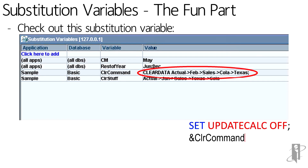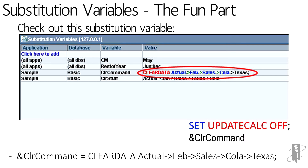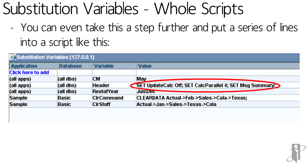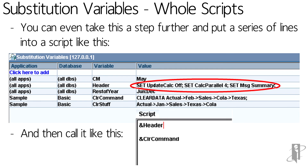Moving on — how about something like this substitution variable: 'ClearActualFebSalesCola Texas' — it's a whole calculation command. What we could do is put the entire command into the script just by putting in the values. This could make it almost like writing a macro we can use in multiple places. Or we can do an entire script — with SET commands and a CLEAR command — and if we needed to change something like CALC PARALLEL, rather than go into 100 calc scripts we can change it all at once, and then just call it like this.